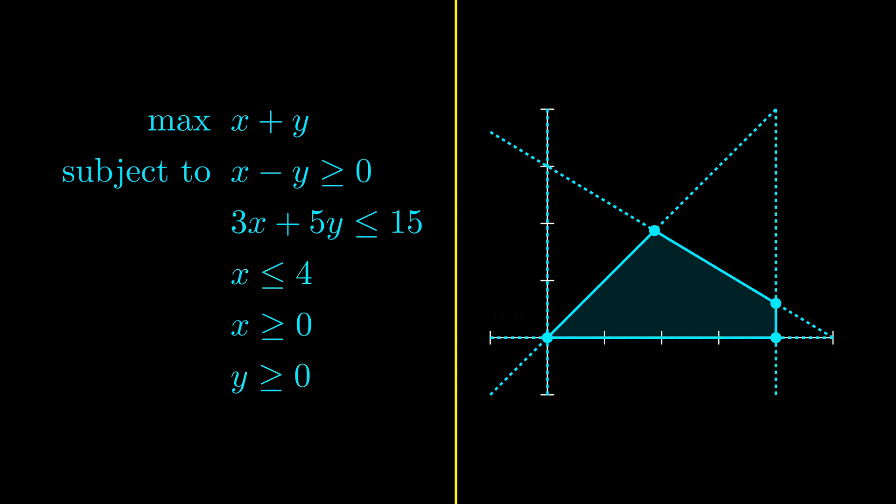For this last vertex, it's actually tight at three constraints, so vertex can sometimes be tight at more than two constraints.